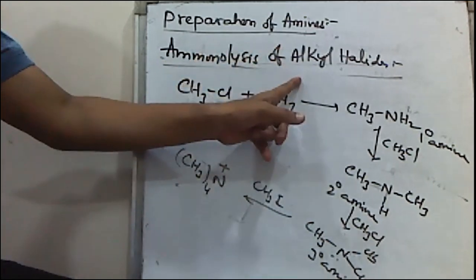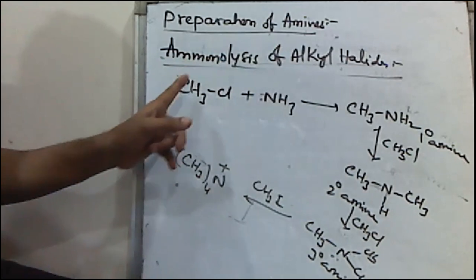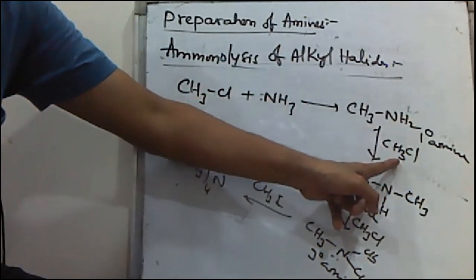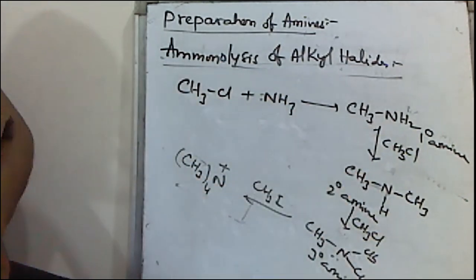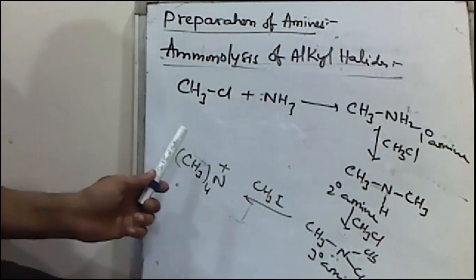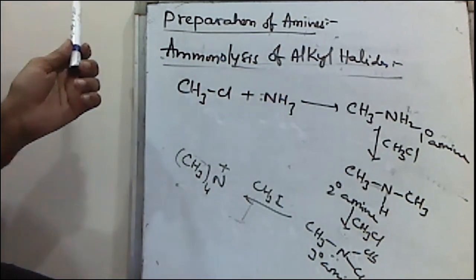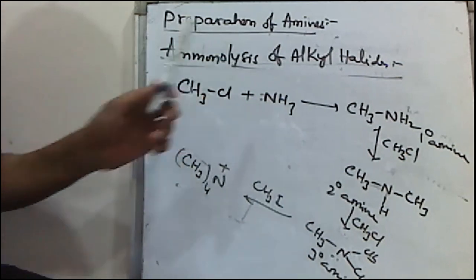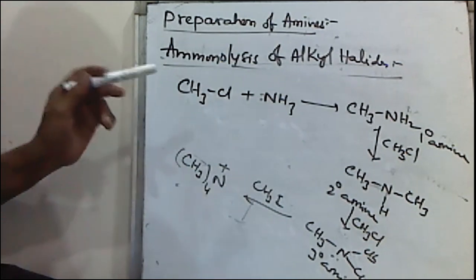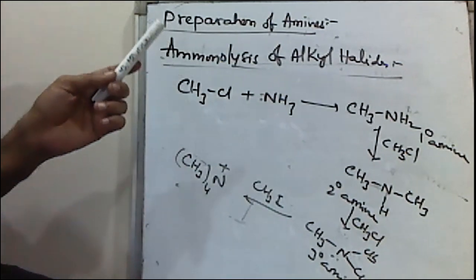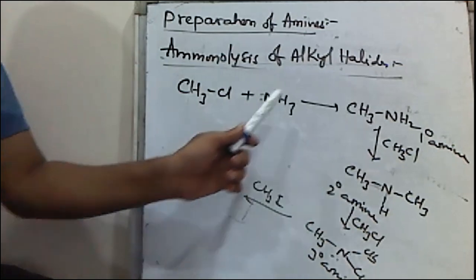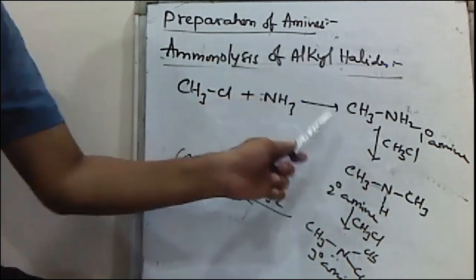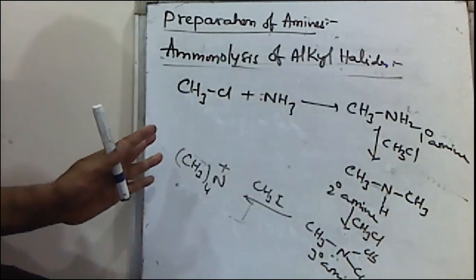Hofmann's Ammonolysis reaction involves sequential treatment: when alkyl chloride is treated with ammonia, initially primary amine is formed. On further reaction with alkyl chloride, secondary amine is formed; on further reaction, tertiary amine; and finally quaternary ammonium salt. When alkyl halides or aryl halides are treated with ammonia, nucleophilic substitution takes place and amines are formed.